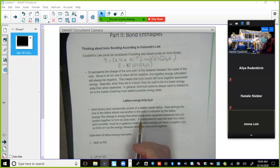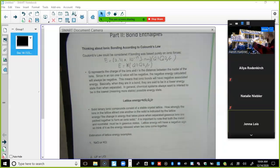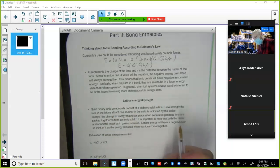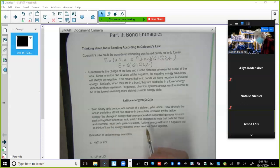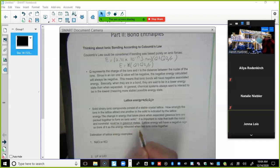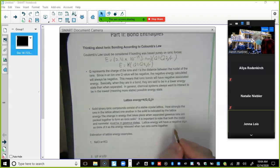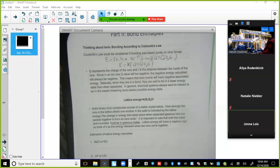All right, what are we talking about? Lattice energy. So lattice energy is going to be negative when the two ions come together they release energy. Solid binary ionic compounds consist of stable crystal lattice. How strongly the ions in the lattice attract one another in a solid is indicated by the lattice energy, the change in energy that takes place when separated gaseous ions are packed together to form an ionic solid. It's important to note that both metal and non-metal must be in gaseous states.